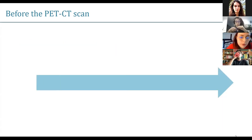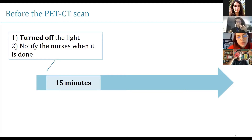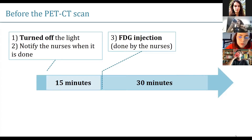Regarding the protocol, first of all, what you need to do is turn off the lights and then notify the nurses when it's done, because they will need to come back 15 minutes later to do the FDG injection. This is done only by the nurse, not by us — it's really the nurse who needs to do that.